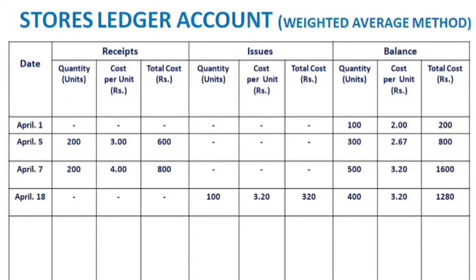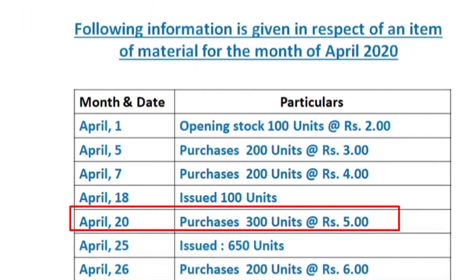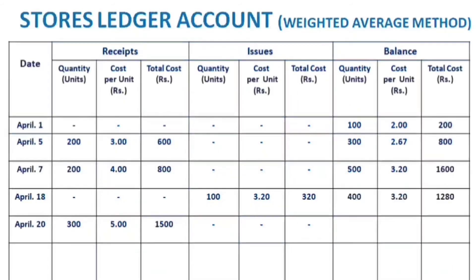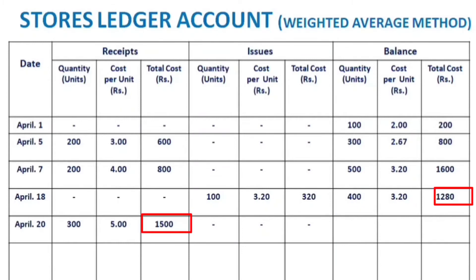For April 20th, there is a purchase of 300 units each at 5 rupees, totaling 1,500 rupees in receipts. There are no issues for that date. The new balance is 400 units plus 300 units equals 700 units, and the total cost is 1,280 plus 1,500 equals 2,780 rupees.